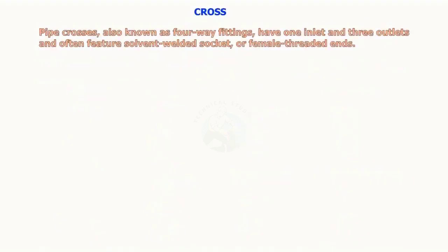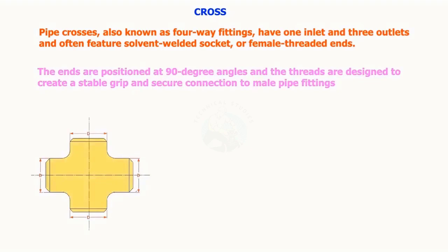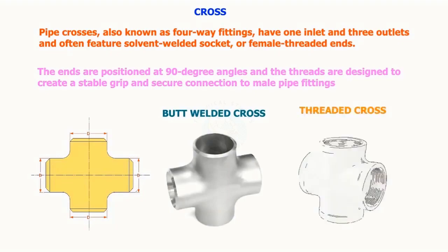Pipe crosses, also known as four-way fittings, have one inlet and three outlets and often feature solvent-welded socket or female-threaded ends. The ends are positioned at 90-degree angles, and the threads are designed to create a stable grip and secure connection to the male pipe fittings.